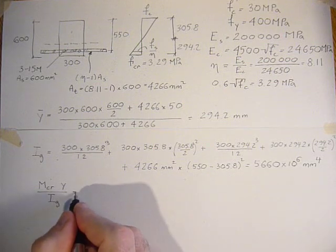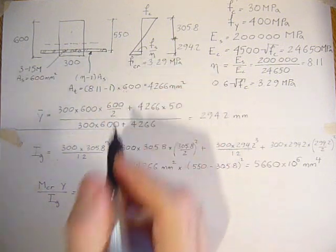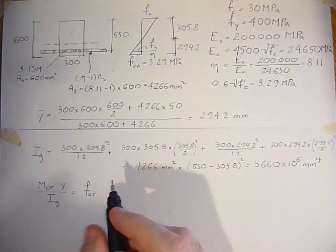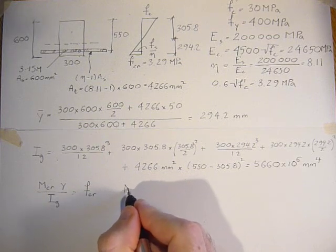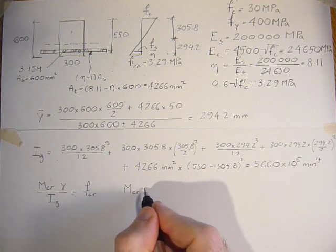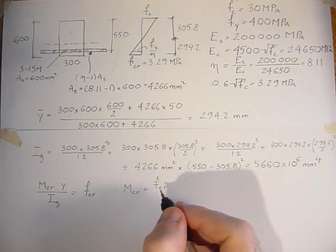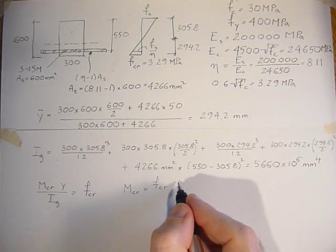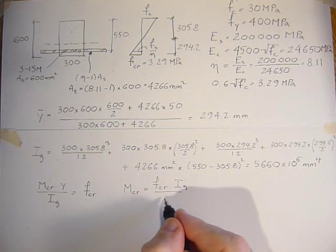That equals the stress at cracking. We can rearrange to get the cracking moment: M_cr equals the cracking stress times the gross inertia divided by Y.